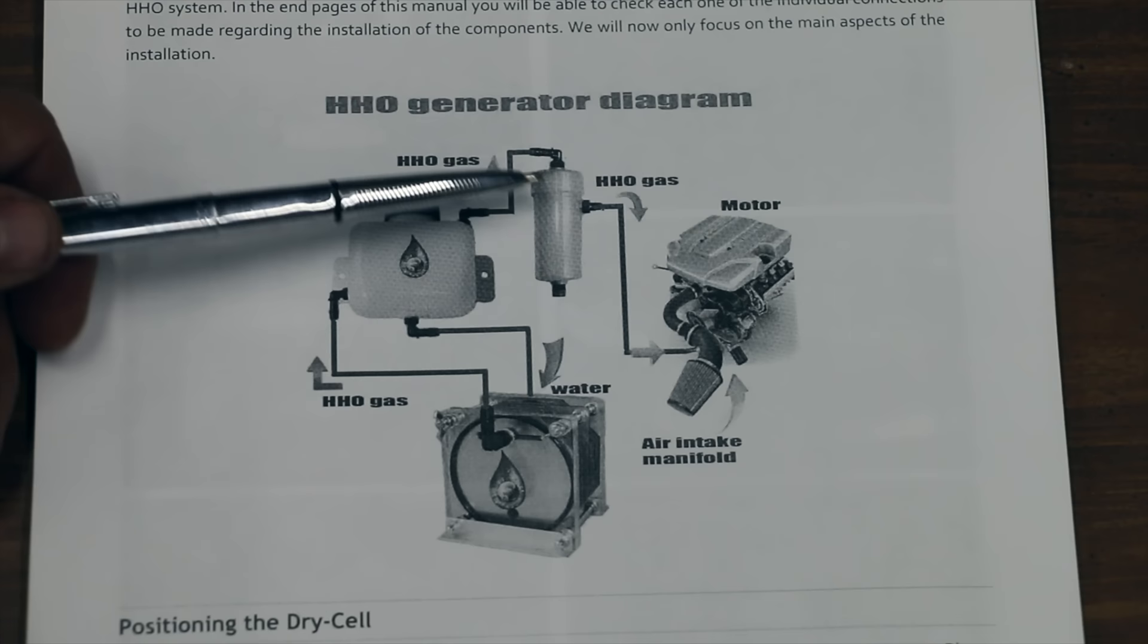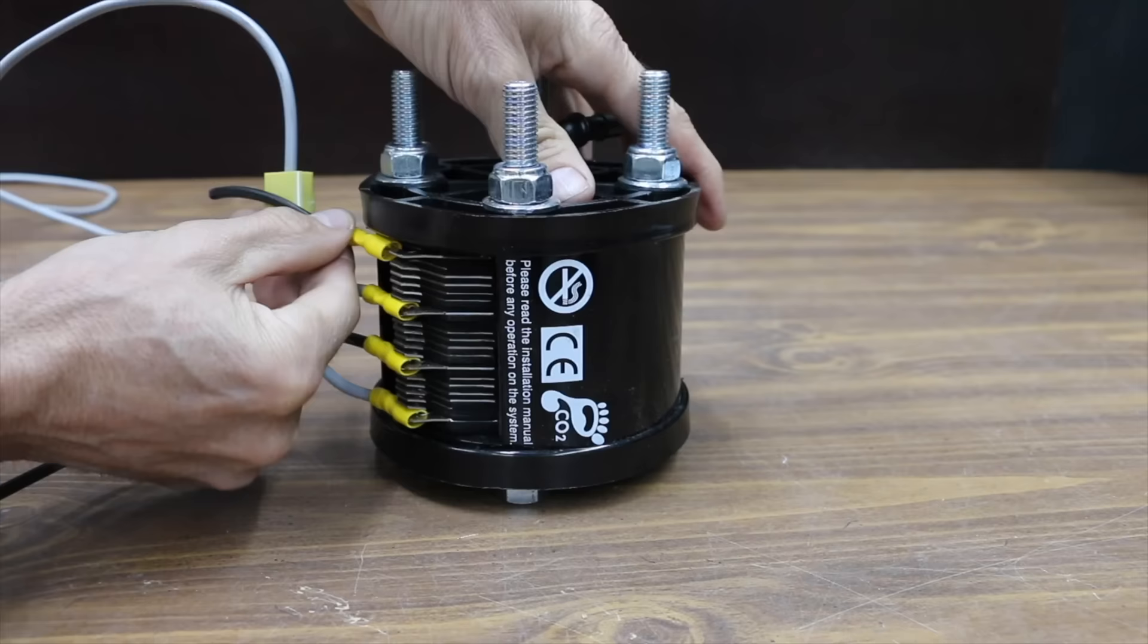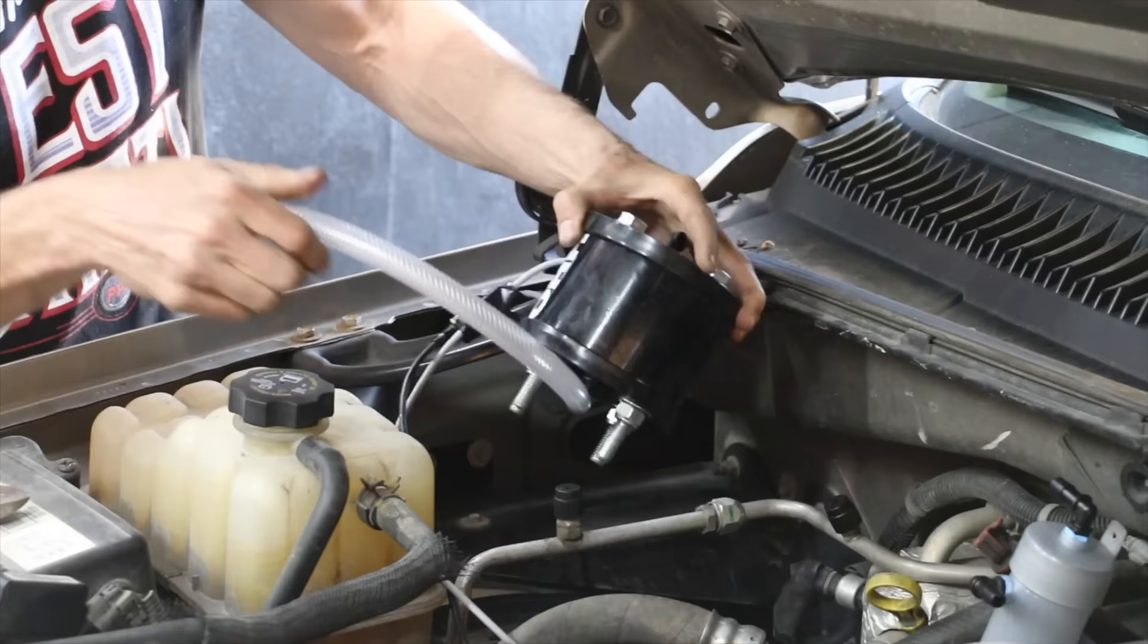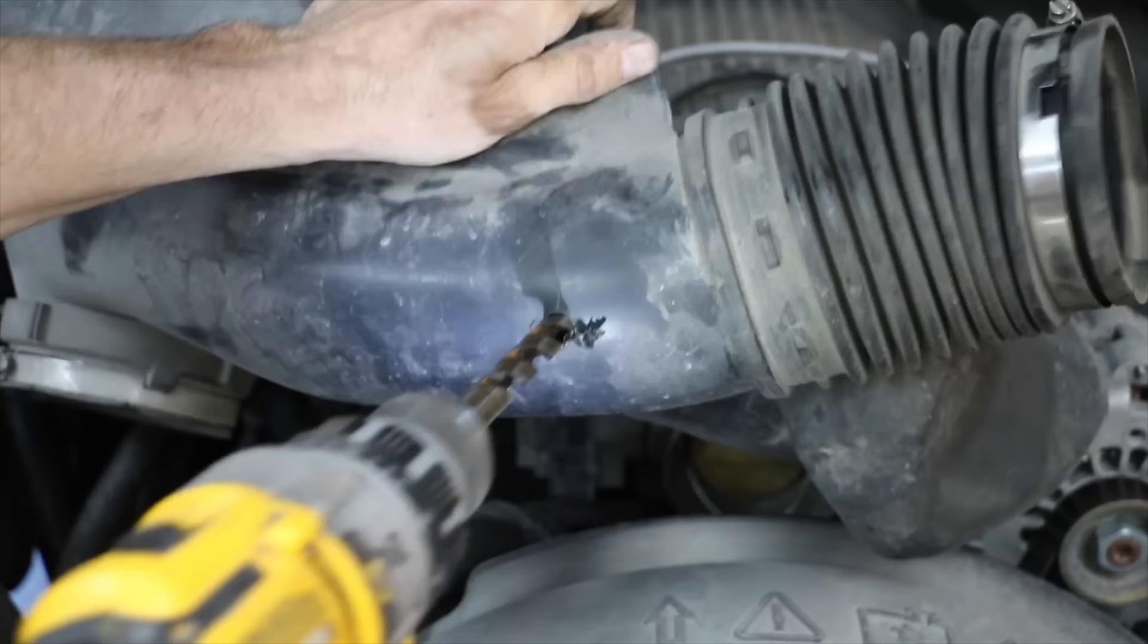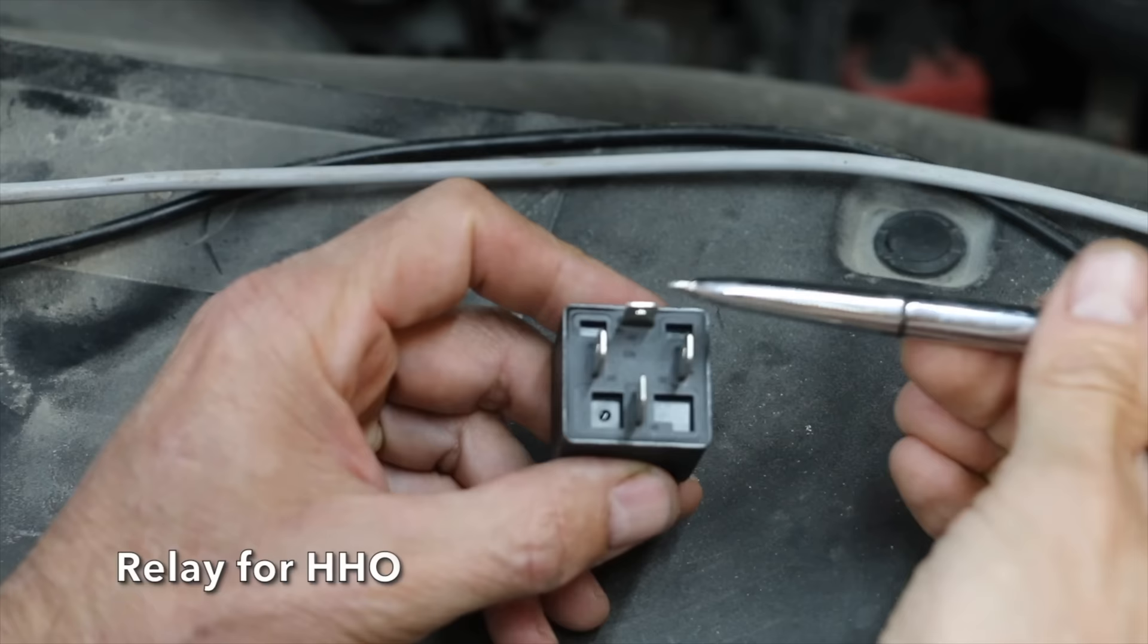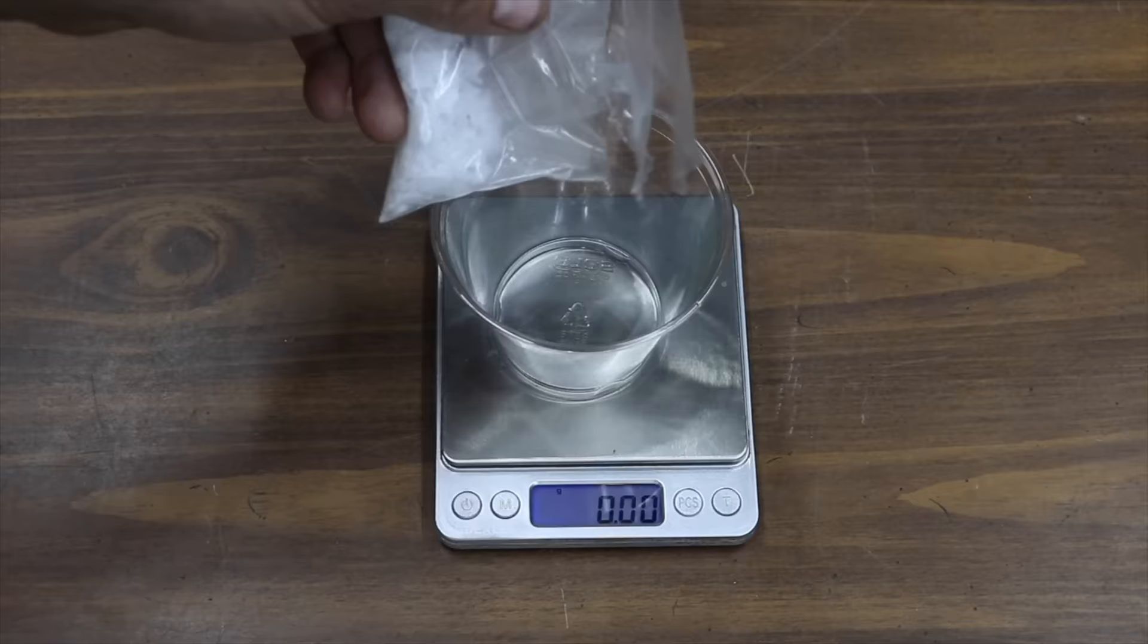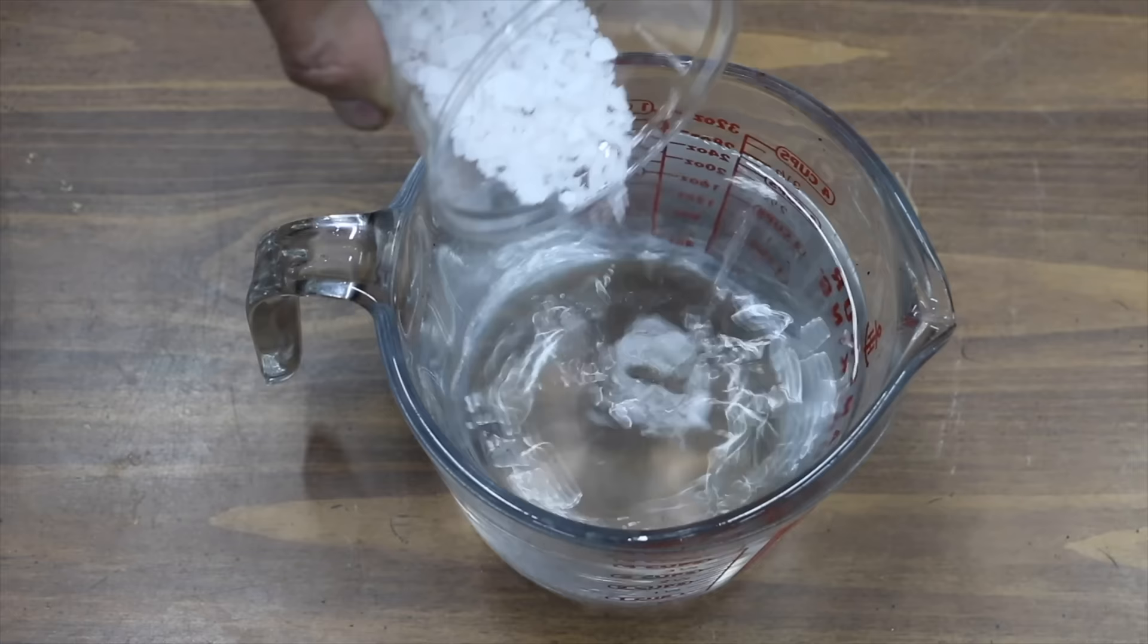There's quite a bit of electrical and plumbing that has to happen to make this kit operational. This includes permanently altering some things under the engine bay, such as drilling a hole in the air intake assembly. There's a relay that powers up the HHO unit while the vehicle is in use. In addition to buying the kit, you'll also need to buy some potassium hydroxide for the electrolyte solution.